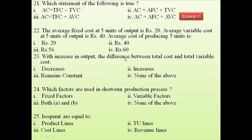Question 23: with an increase in output, the difference between total cost and total variable cost — remains constant. The difference between total cost and total variable cost is total fixed cost. In the short run, total fixed cost always remains constant. Note the distinction: the difference between TC and TFC (which is TVC) increases with output, but the difference between TC and TVC (which is TFC) remains constant.